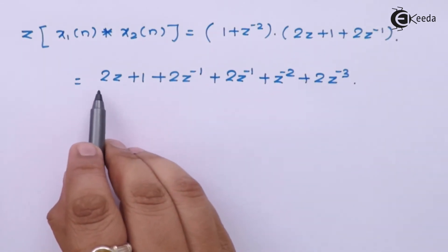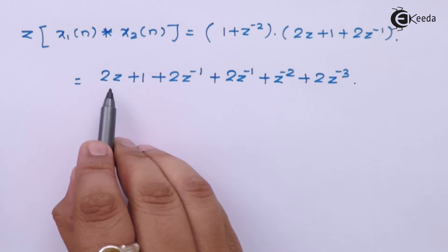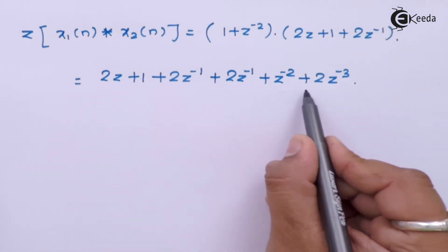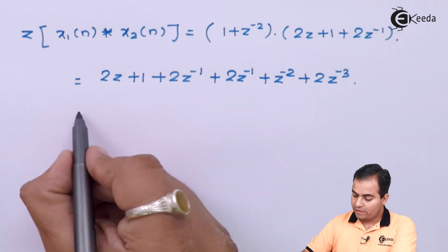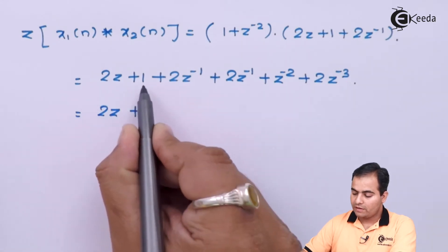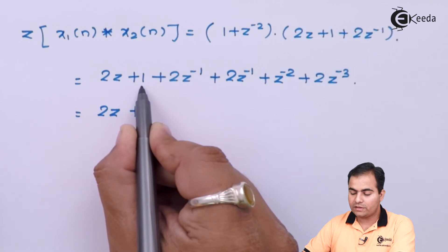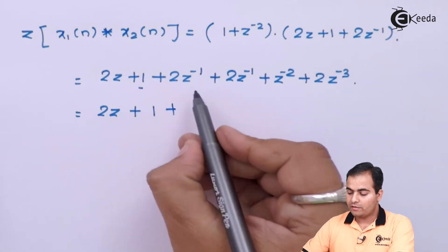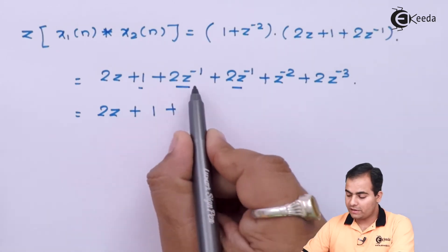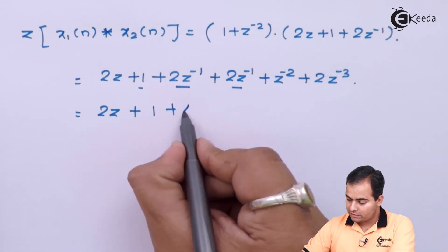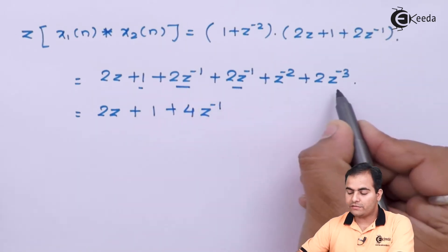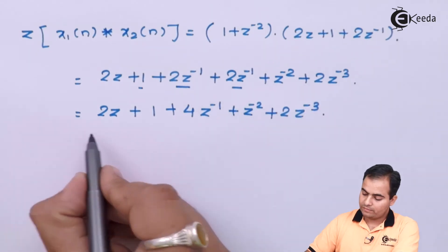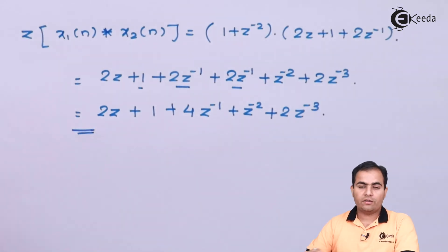Now add the coefficients of like powers of Z. Z to the power 1 has coefficient 2 (no other terms). Z to the power 0 has coefficient 1. Z inverse appears twice with coefficients 2 and 2, giving 4. Z to the power minus 2 has coefficient 1. Z to the power minus 3 has coefficient 2. This is the answer of the convolution theorem.